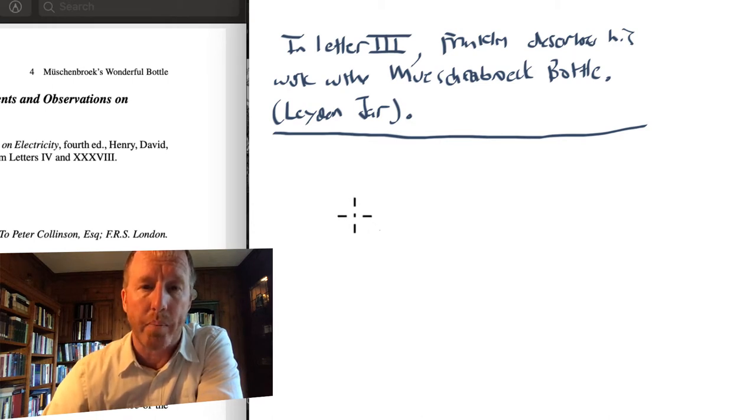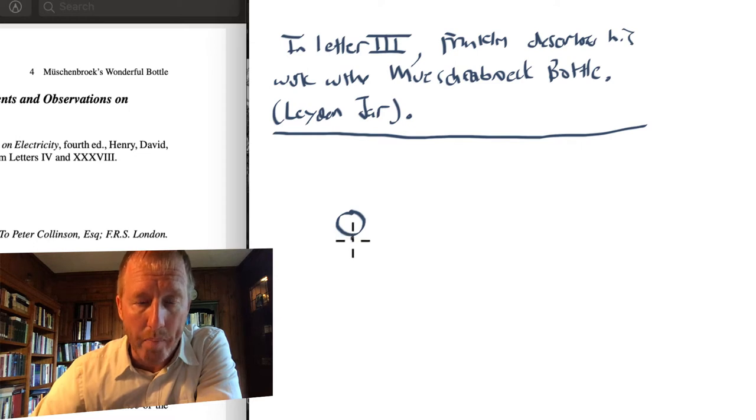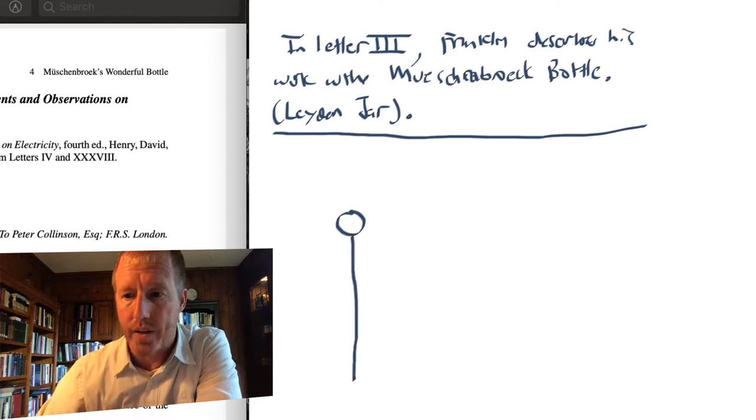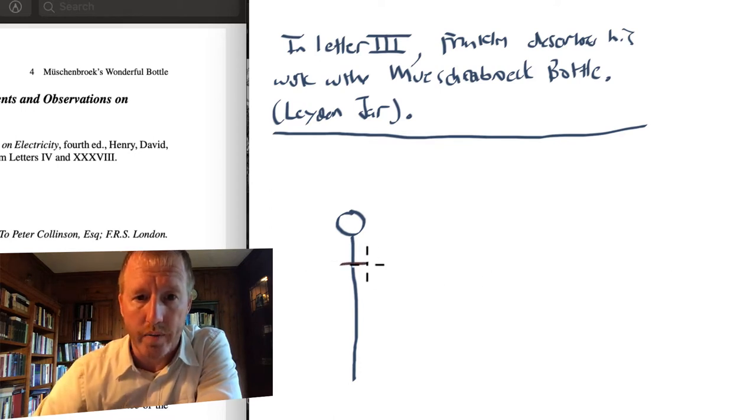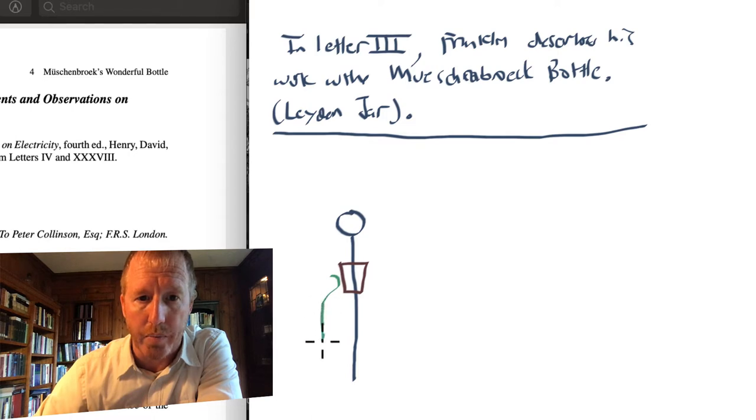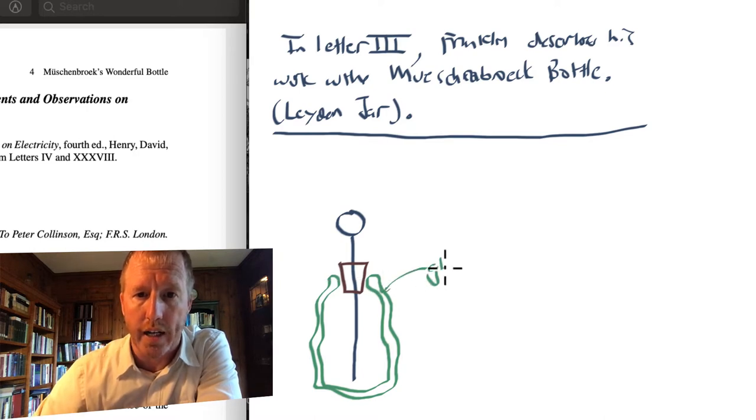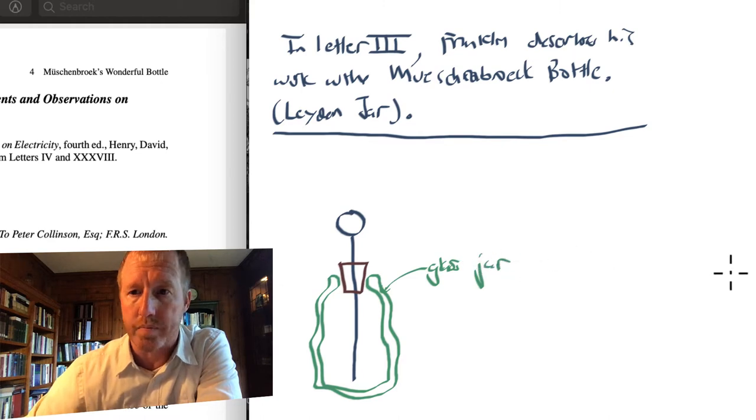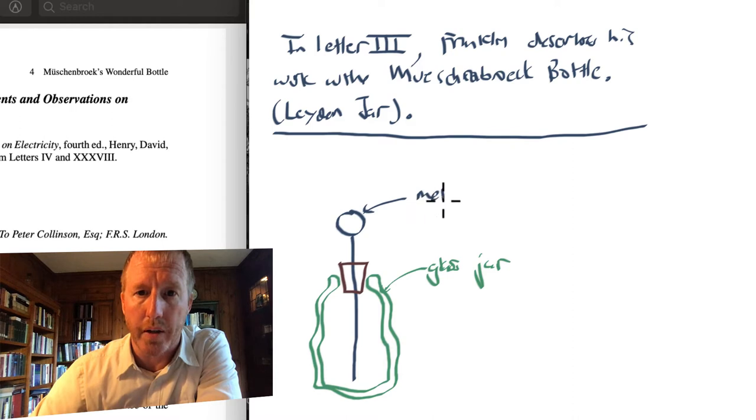So what is a Muchenbrook bottle or a Leiden jar? Well, it's an early version of what we would today call a capacitor. So let me make a sketch of what a Muchenbrook bottle looks like. Here you have a metal ball attached to a thin metal wire. This passes through a cork, and the cork is inserted into a bottle. That's why, after all, it is called a Muchenbrook bottle. I'll make the bottle in green. This is a cross-sectional drawing. So this is the glass jar or bottle. This is a metal ball and a wire sticking down through the cork, which is an insulating material.